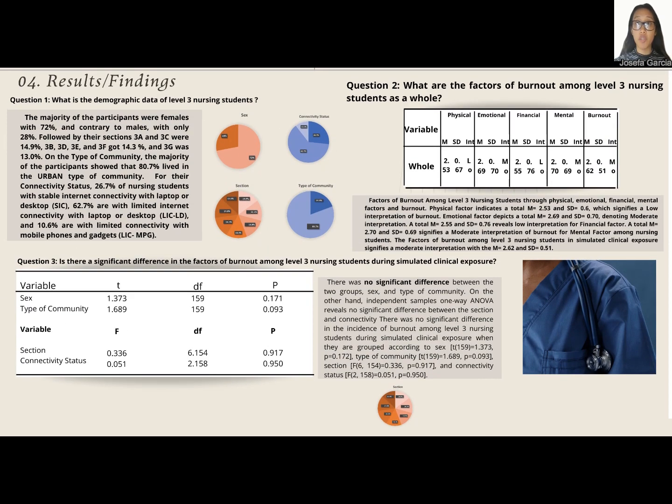For results and discussion, the majority of participants were females with 72% and males with 28%. By sections, 3A and 3C were 14%, 3B, 3D, 3E, and 3F got 14.3%, and 3G was 13%.